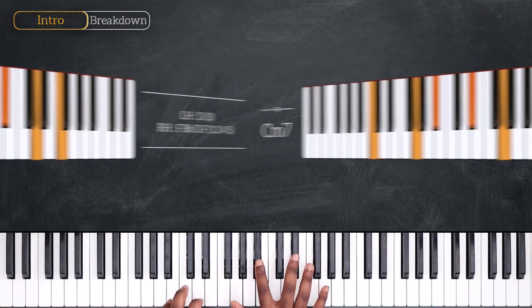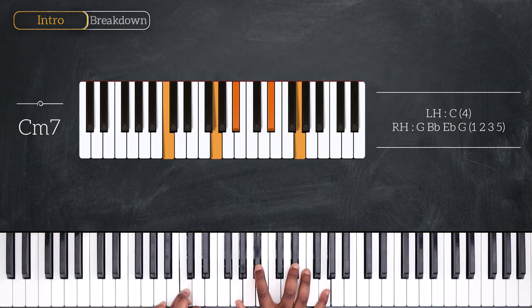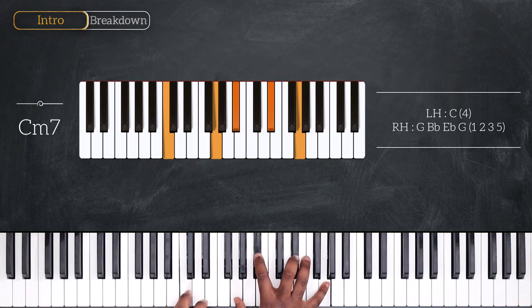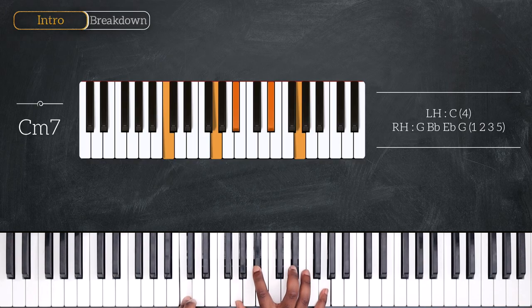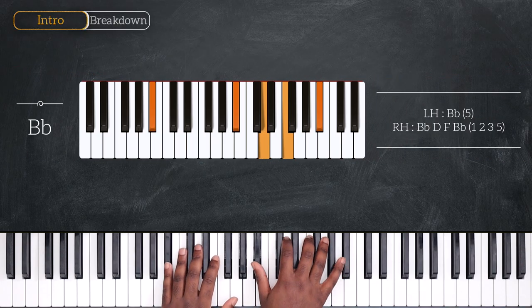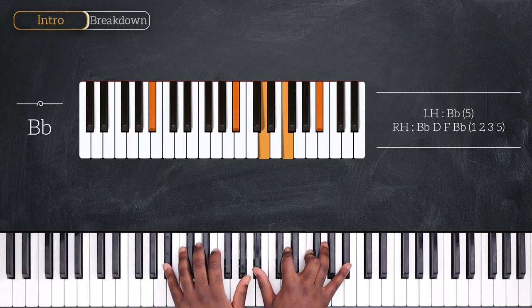Still going down, Cm7. C on the left, G, Bb, Eb, and G. After that, Bb, so the one chord. Bb, Bb, D, F, and Bb again.